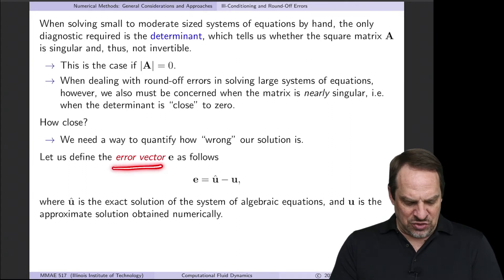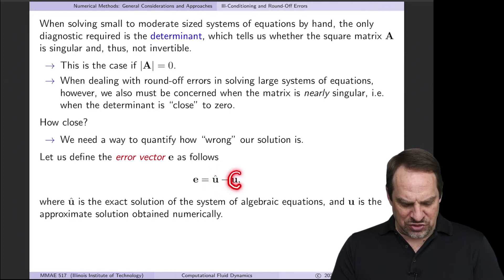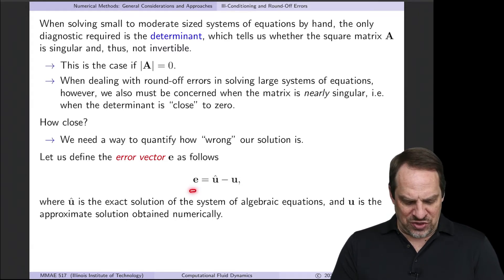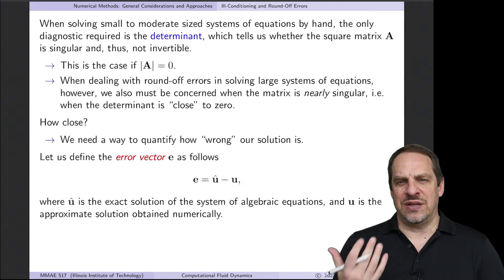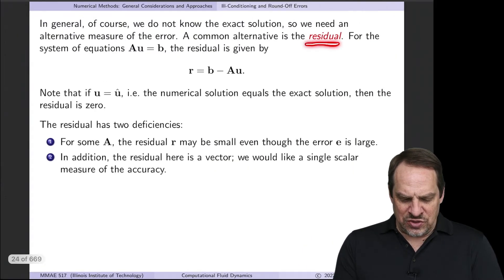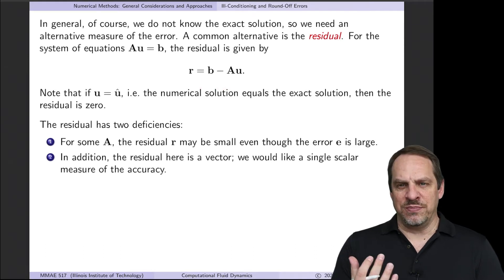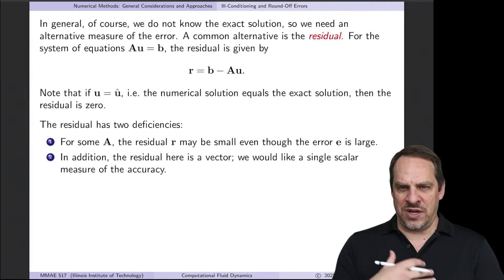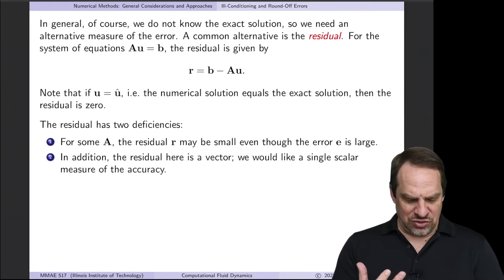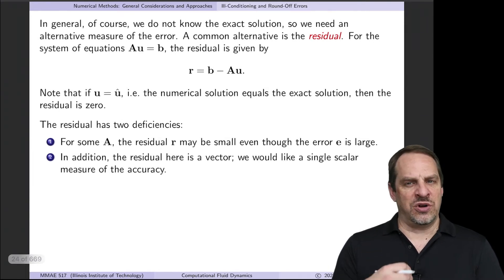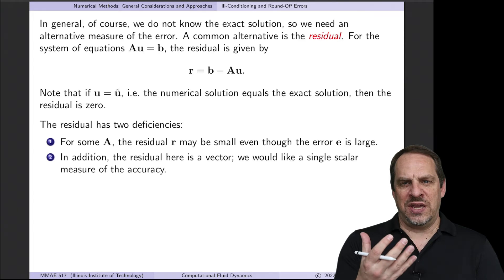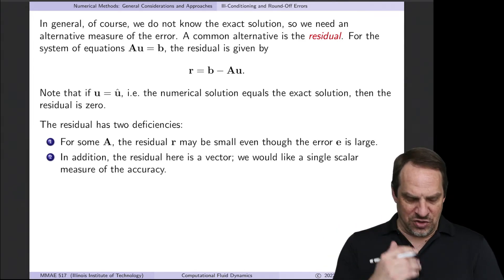One way to do that is to introduce an error vector. An error could be the difference between the exact solution û and the numerical solution u. The problem is I don't know the exact solution, so I can't calculate the error directly. An alternative is to use what's called the residual, which can always be calculated. It's r = b − Au. If u were the exact solution, the residual would be zero. If not — because we only have an approximate solution — the residual will be non-zero and tell us how wrong our solution is. The residual is often used in commercial and open source software to quantify convergence towards a solution.